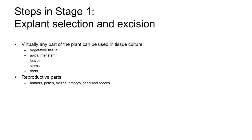Virtually any plant part can be used in tissue culture. We can use vegetative tissue such as apical meristems, leaves, stems, and roots. We can also use reproductive parts such as anthers, pollen, ovules, embryo, seed, and spores.